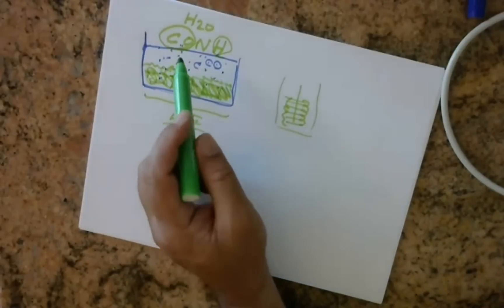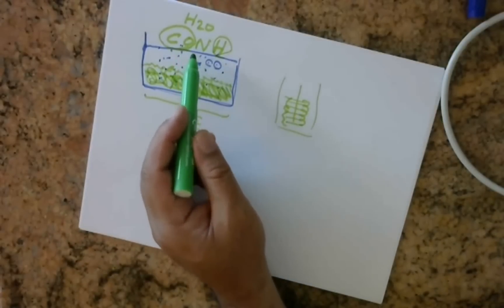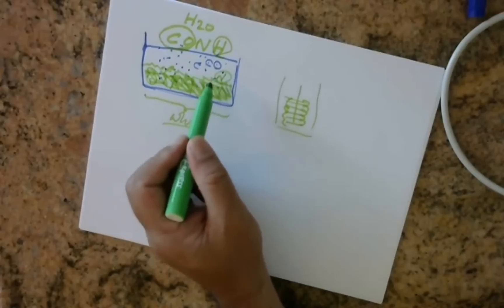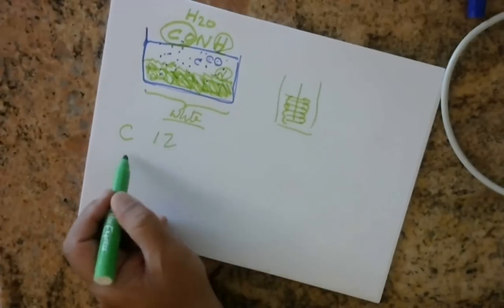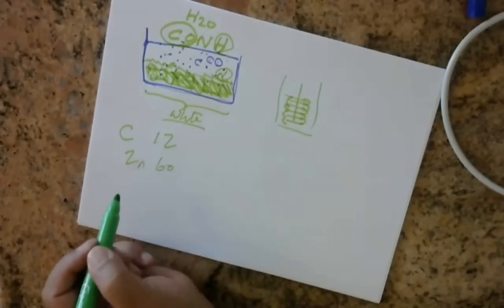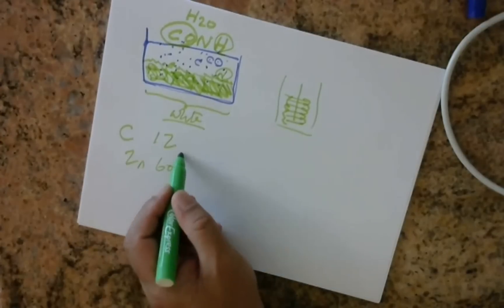But majority of it is CO2 and the Zinc, which is part of the structure. Because again, Carbon is 12, Zinc is 60. It's by the factor.